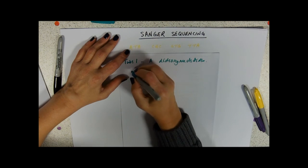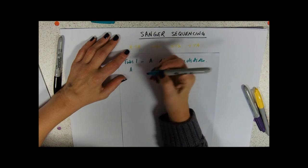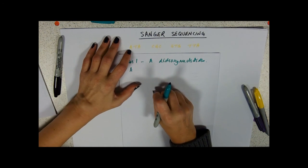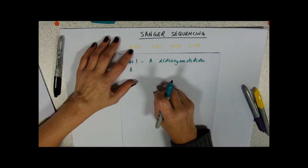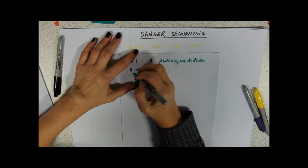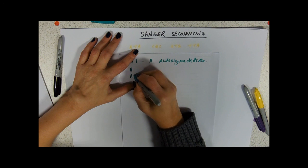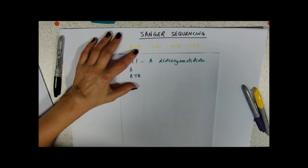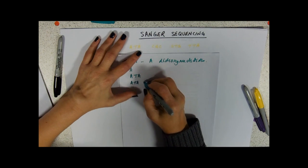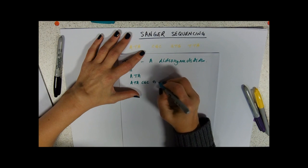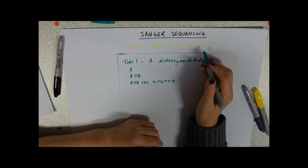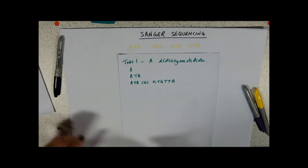What I'm going to get in that tube is ones where the first base that it's added on to that template has been a dideoxynucleotide, and that will give me a fragment that is just an A. If the first one isn't a dideoxynucleotide, it's an ordinary one, it will carry on to elongate. If the next A that joins on is a dideoxynucleotide, it will stop there and we'll get A T A. If the first one's okay and the second one's okay, we'll get A T A C G C G C G T G T T A, and it doesn't matter if it stops there, that's the end of our sequence.